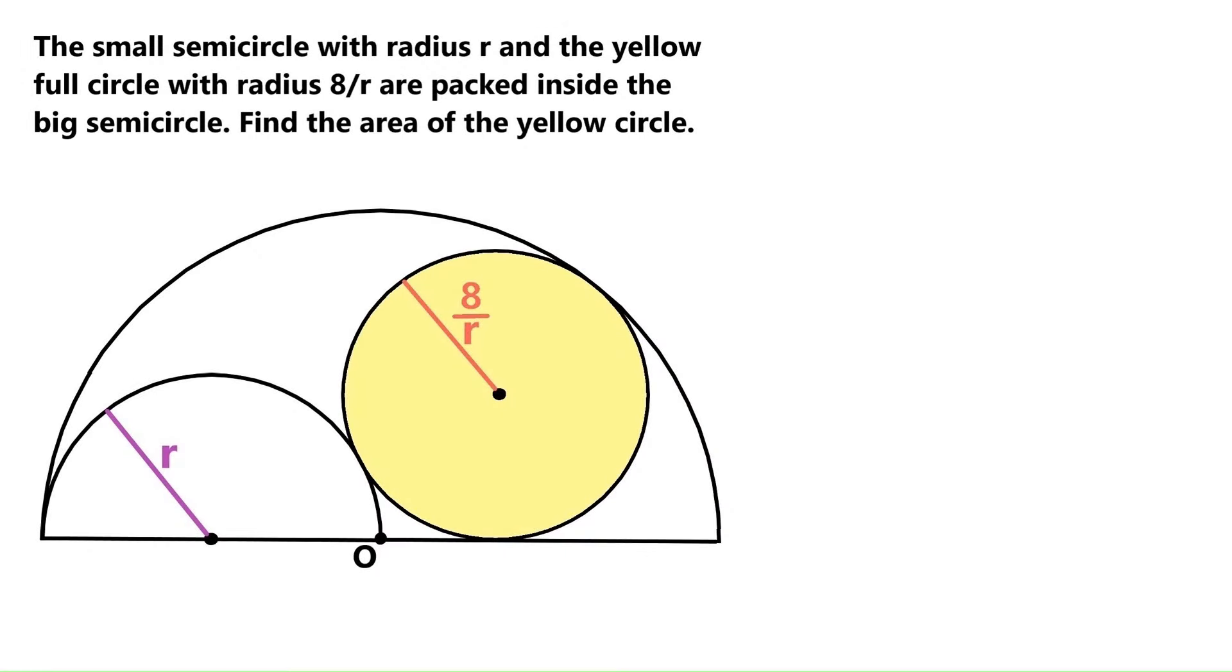In this super cool geometry problem, we've got this big semicircle, and this small semicircle is inside the big one, and it's got this radius r. This yellow full circle is also crammed inside the big semicircle, and its radius is 8 over r. We don't know any side lengths whatsoever, and we need to find the area of this yellow circle.